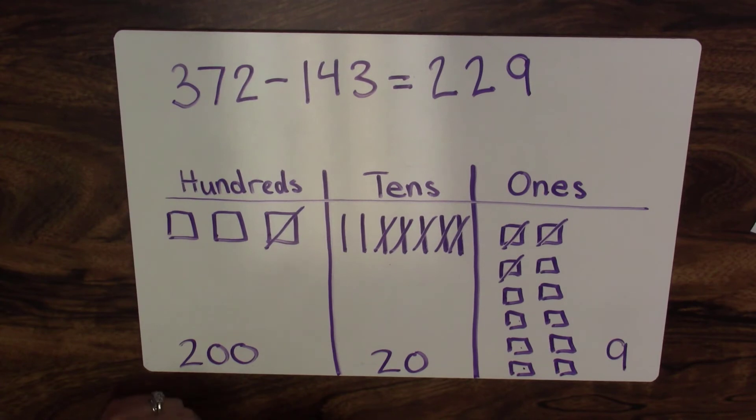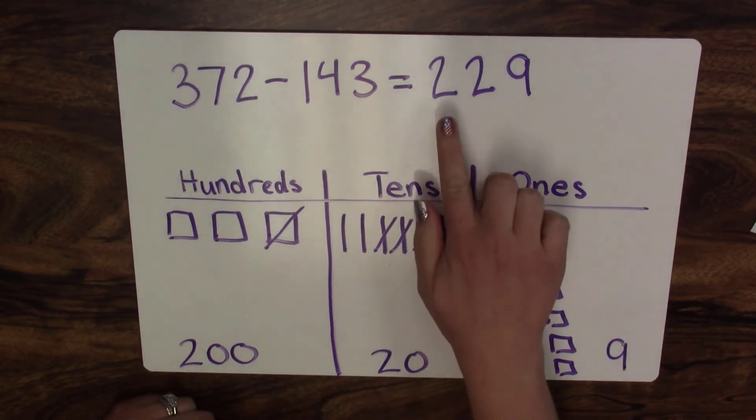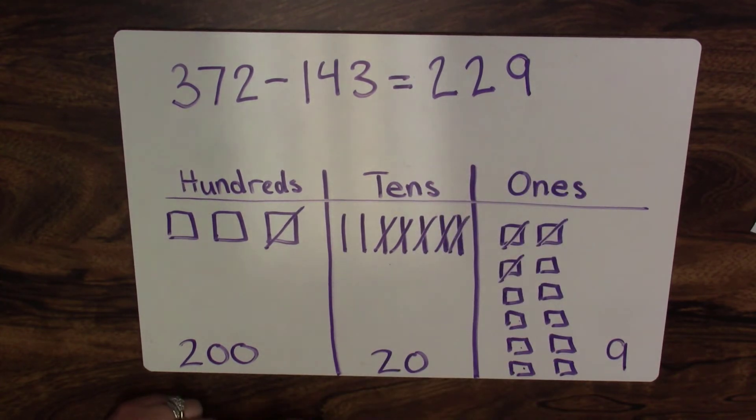So to answer the question, how many students will be on the second bus, there will be two hundred twenty-nine students on the second bus.